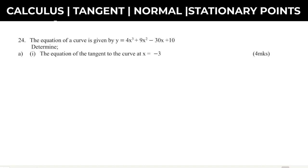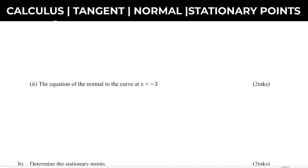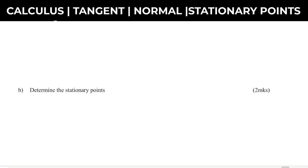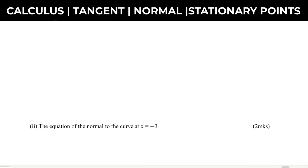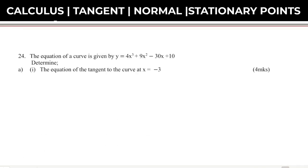Determine part 1: the equation of the tangent to the curve at x equals negative 3. Part 2: the equation of the normal to the curve at x equals negative 3. Part B: determine the stationary points. And the last one: state the nature of each of the points in B above. So those are the questions. Let's go to the first one — determine the equation of the tangent to the curve at x equals negative 3.